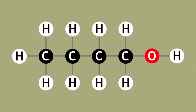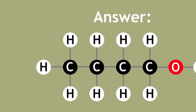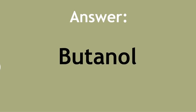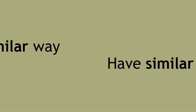Pause this video now and try to work out the name of this molecule. There are four carbon atoms in this molecule with an alcohol group, and so its name is butanol. The alcohol functional group means that all these compounds will react in a similar way and will have similar properties.